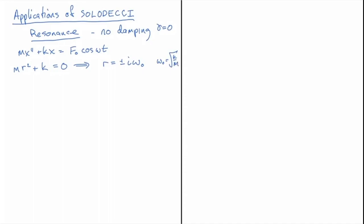And so that gives us a homogeneous solution x sub h equals c1 cosine of omega naught t plus c2 sine of omega naught t. So that's the homogeneous solution, and now we look for a particular solution. Let's look at a couple cases here.